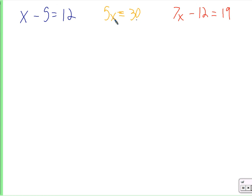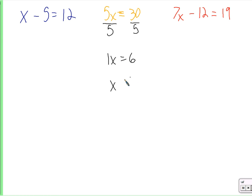In order to get just that quantity by itself, we divide by 5 on both sides. 5 divided by 5 is 1, so we have 1 times x. And what's 1 times x? X. That's what we're trying to get to. 1 times x equals 6, so x equals 6.